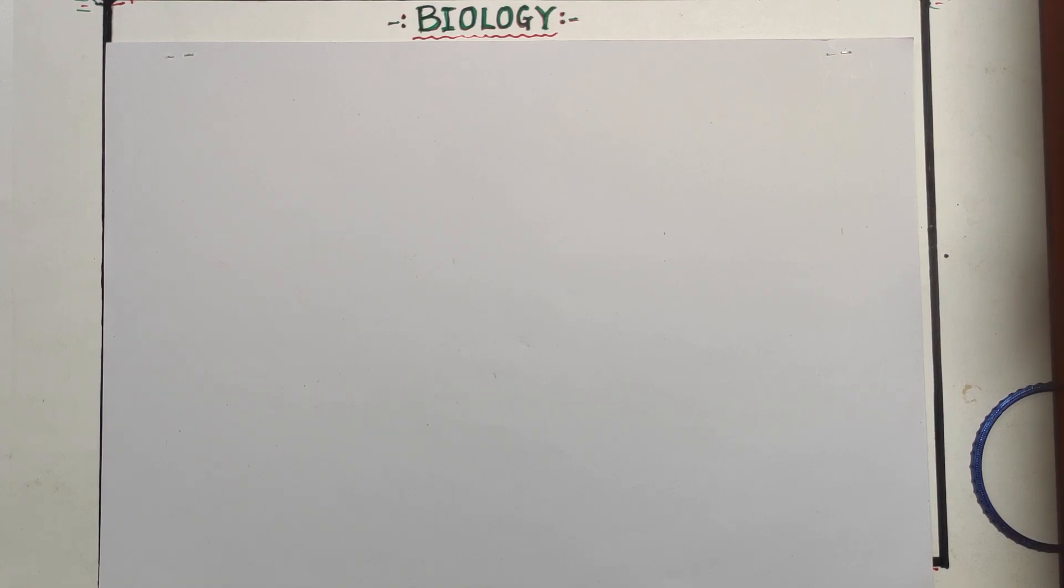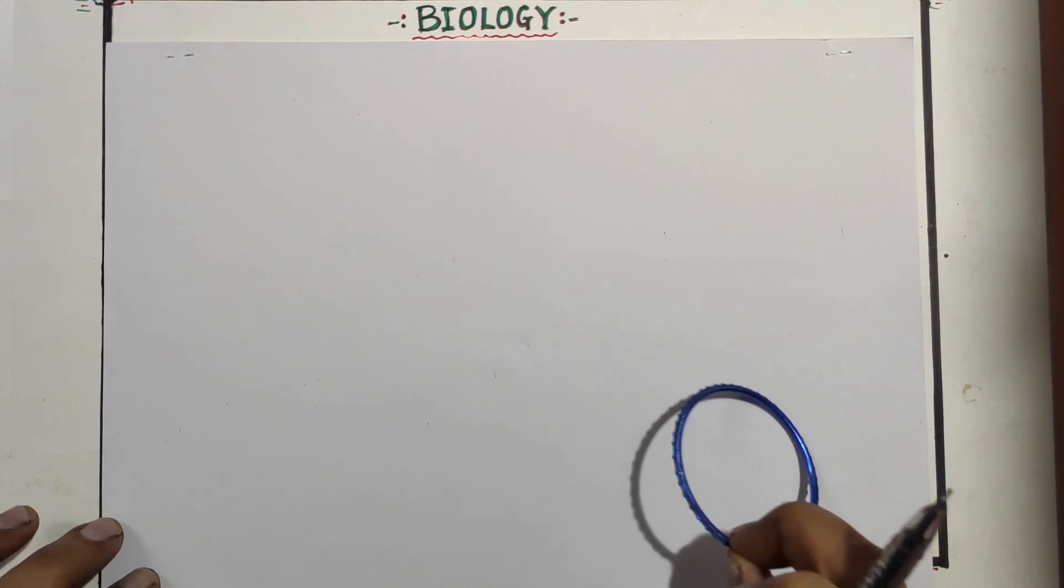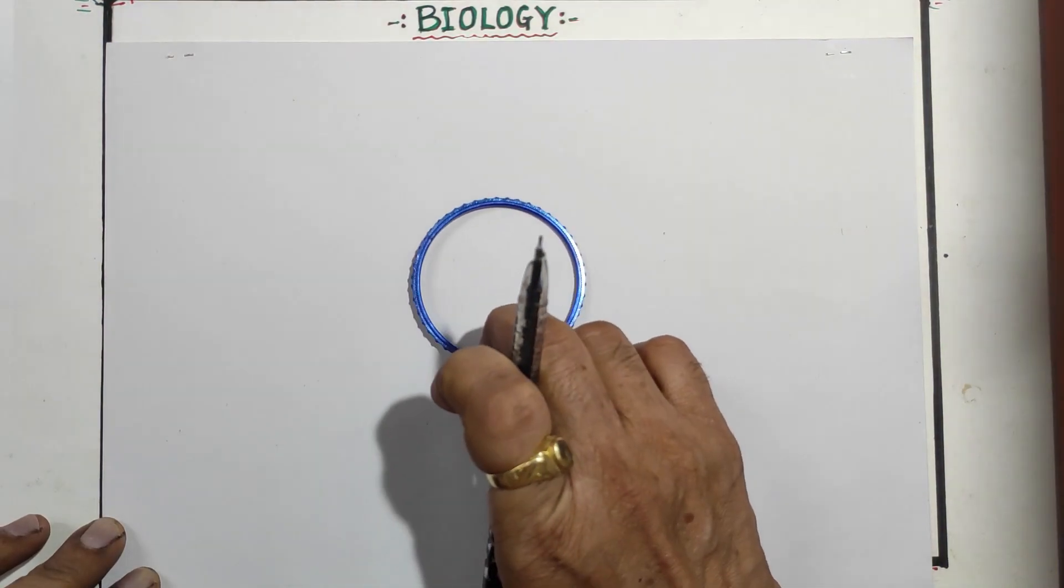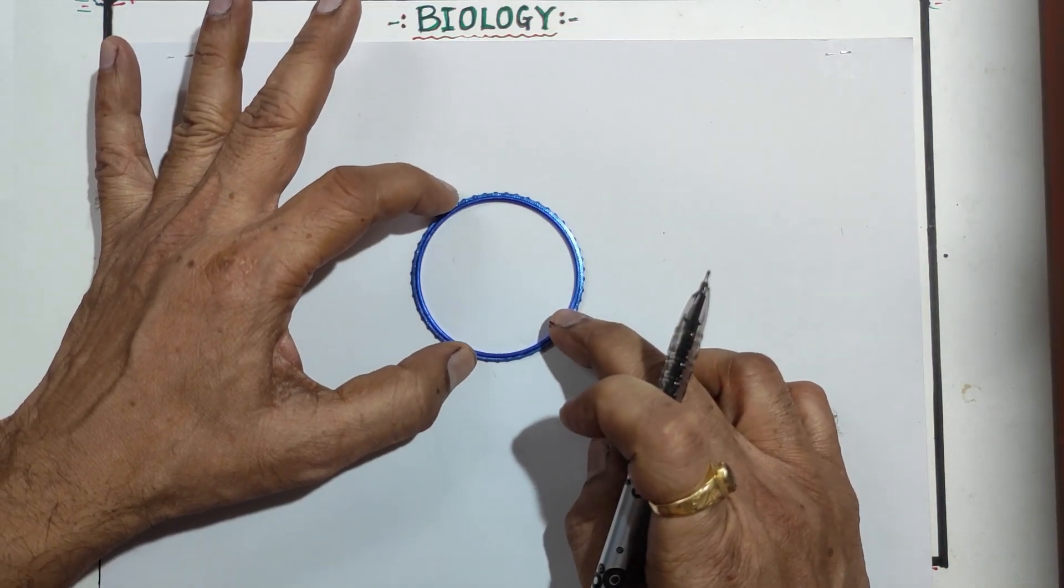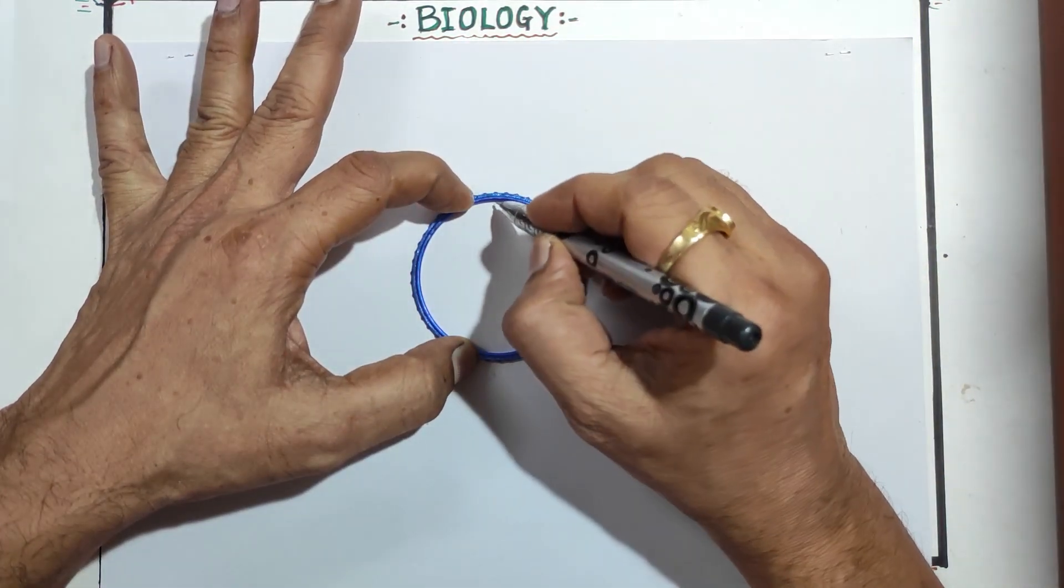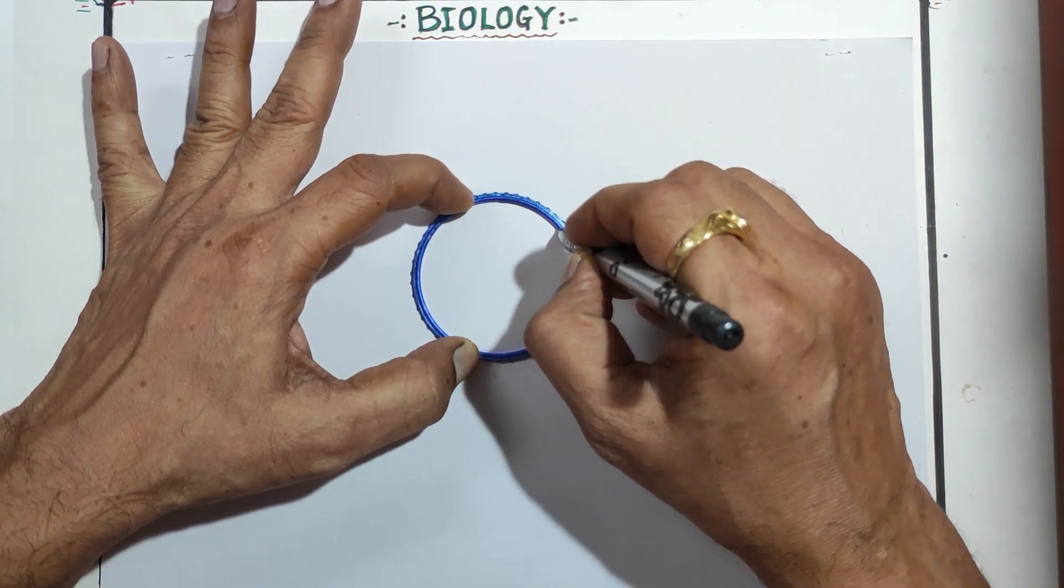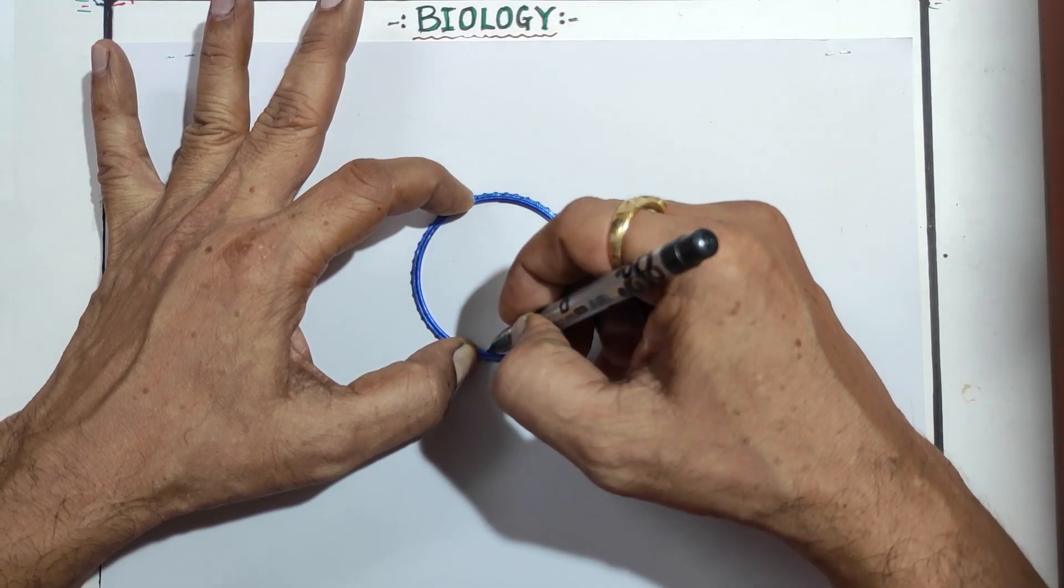Welcome dear students to my channel. Today we will see how to draw the T.S. of ovary of hibiscus flower easily. Take any ring, from inside draw a circle.